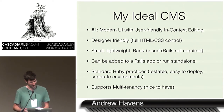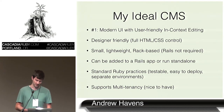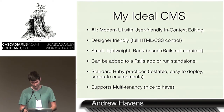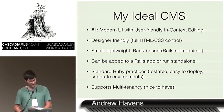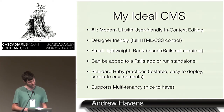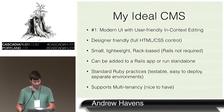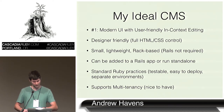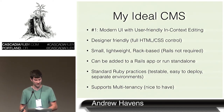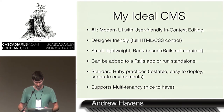Sometimes I want a small site that has a CMS — something like Sinatra as a small application that you deploy. I don't want to have to deploy an entire Rails app just to have a CMS. But in some cases I am building a Rails app and I want to include some CMS functionality to give the client access to edit some tiny piece of content on the page. And in all cases: standard Ruby practices, testable, easy to deploy, separate environments, and supports multi-tenancy.